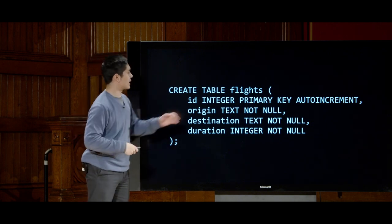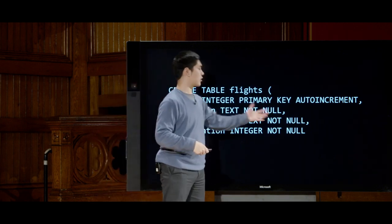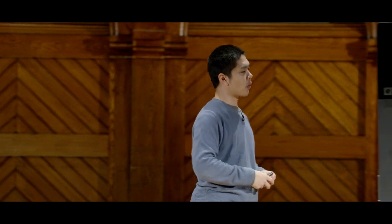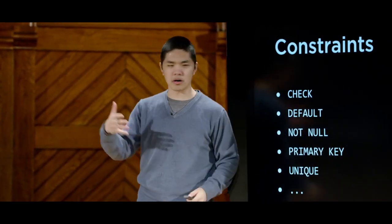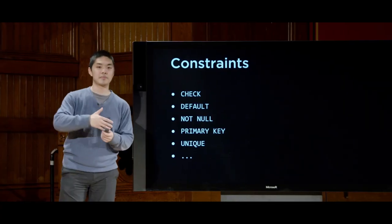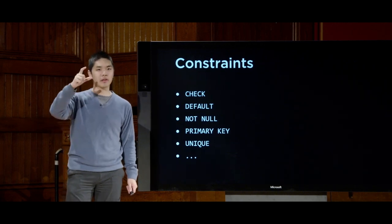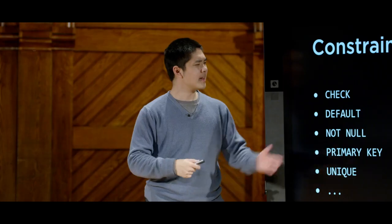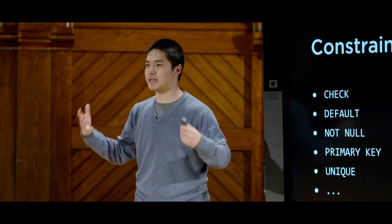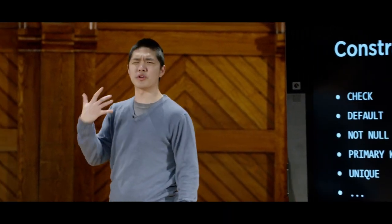There are a number of different types of constraints you can add to a column. NOT NULL we've seen. DEFAULT adds a default value. PRIMARY KEY we've seen. UNIQUE guarantees every value in that column is distinct — if you don't want the same value to appear twice. And CHECK can enforce that a value obeys a certain condition, like a number falling within a certain range. For example, if you're storing movie ratings, you might check that ratings fall within 1 to 10. Via constraints, you ensure data added to the table is valid.